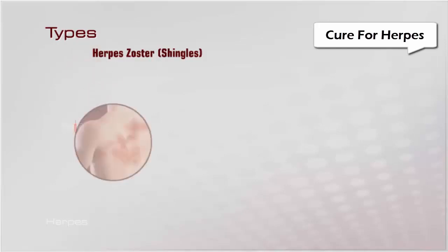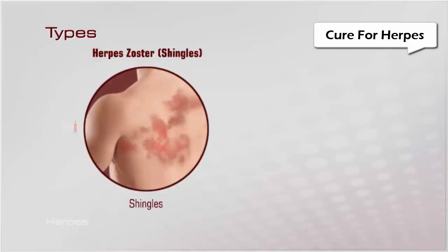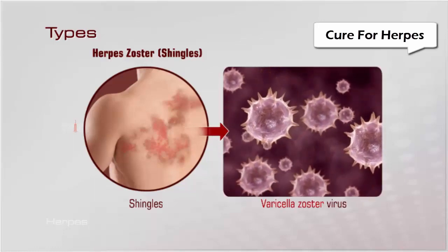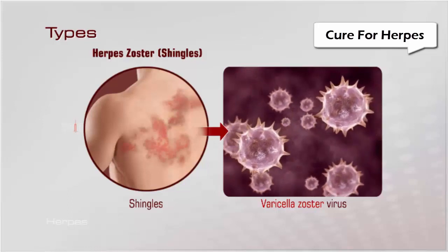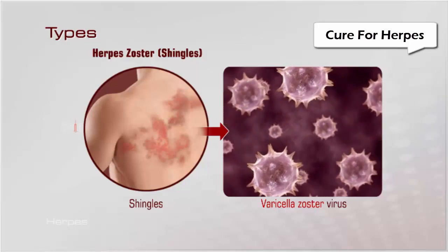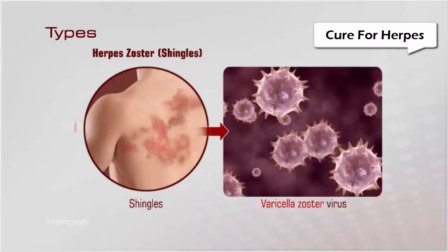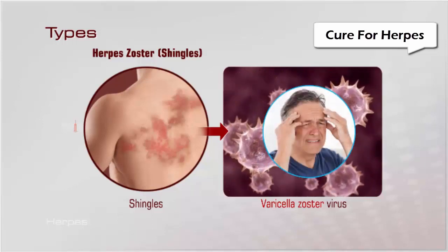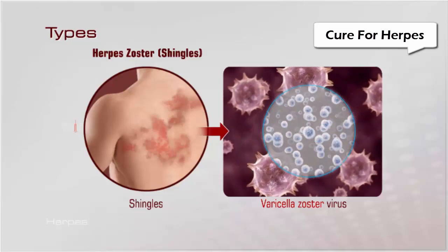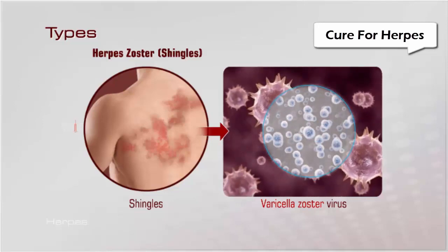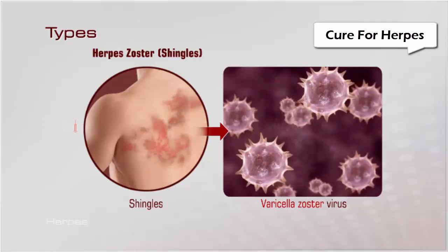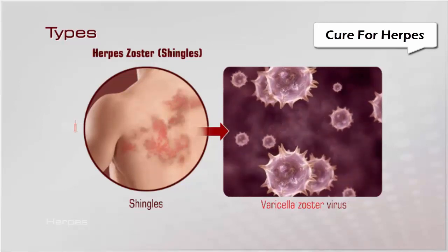Herpes zoster, or shingles, is a skin rash caused by the varicella zoster virus that causes chickenpox in childhood. After a childhood infection, this virus remains dormant in the nervous system. Certain conditions such as stress or immunodeficiency, such as with AIDS or cancer, can cause herpes zoster infection due to reactivation of the virus.